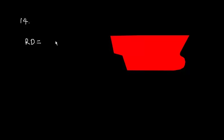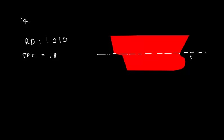In this video I am going to solve question number 14 of exercise 5. A vessel is floating at a draft of 7.8 meters in dock water, where the relative density of dock water is 1.010 and TPC is 18. The draft is 7.8 meters.